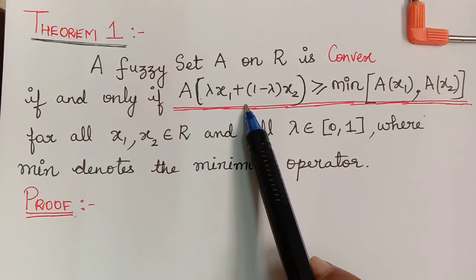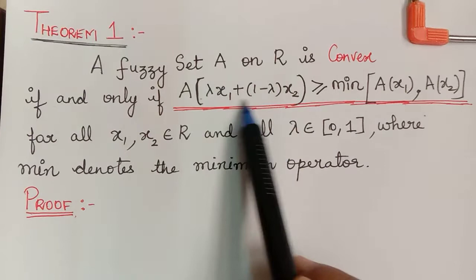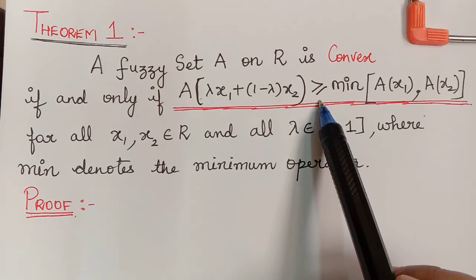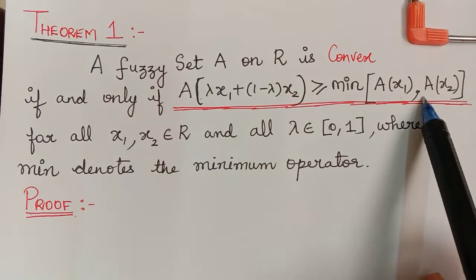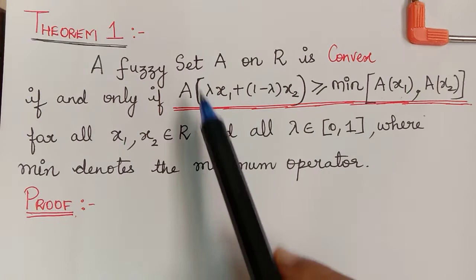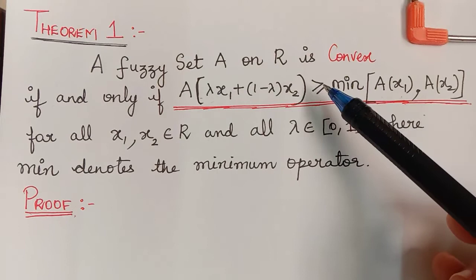We know that A of lambda x1 plus 1 minus lambda x2 represents the membership grade of this expression. So, if the membership grade of this expression is greater than or equal to the minimum of the membership grade of x1 and the membership grade of x2, for all x1 and x2 in R, then the fuzzy set A is said to be convex, and it is vice versa also.